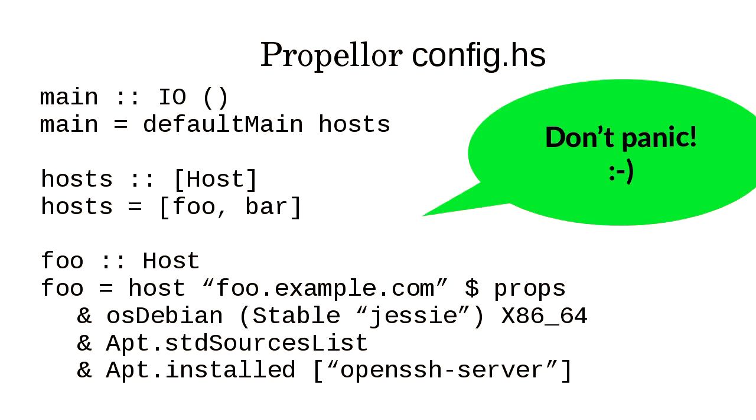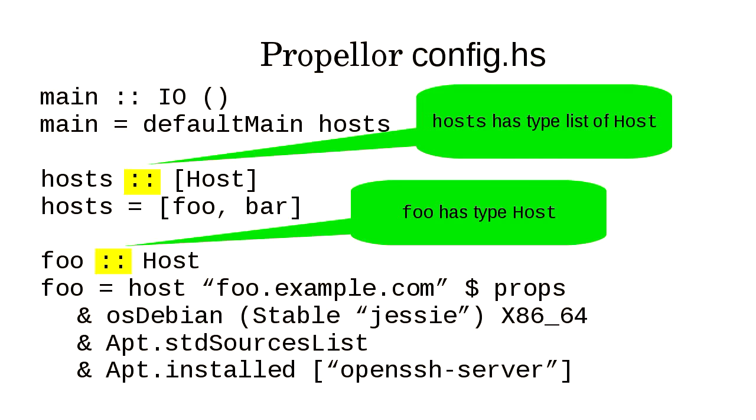The double colon syntax in Haskell means 'is the type of this thing.' The thing on the left is the function or value name and the thing on the right is the type. So 'hosts :: [Host]' means hosts has type list of host, and 'foo :: Host' means foo is a host. This is the key Haskell syntax to understand: double colon means type annotation.